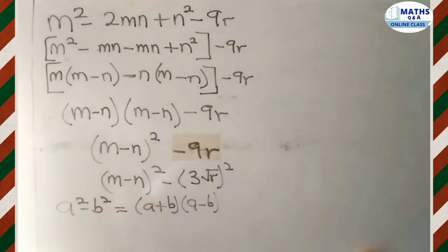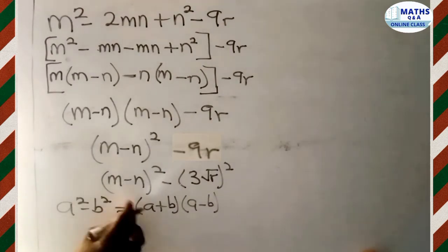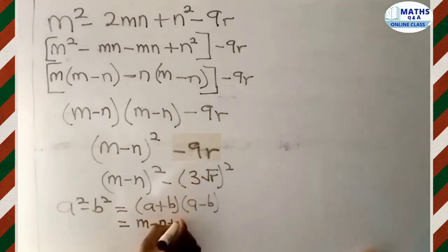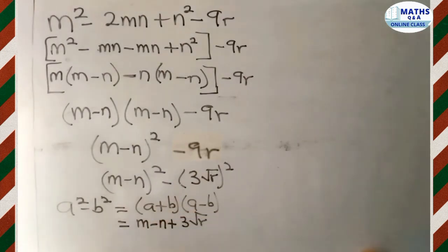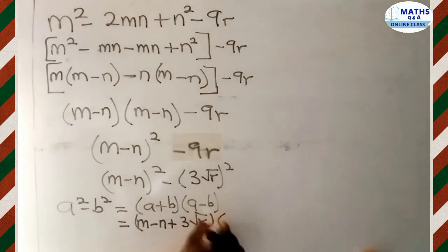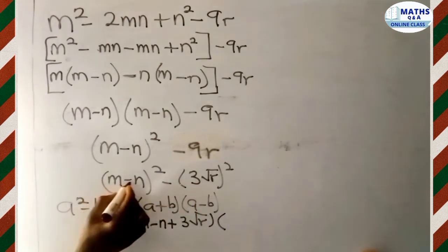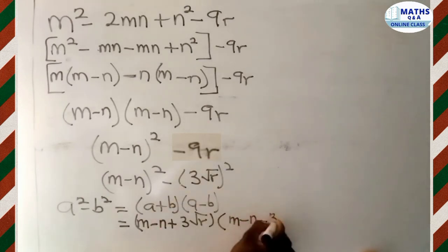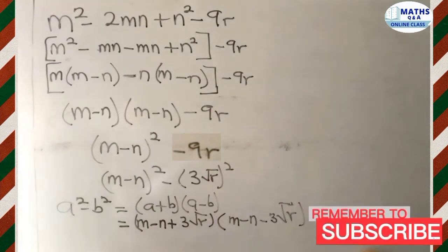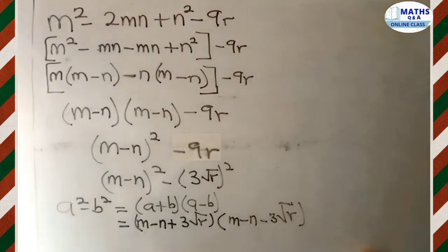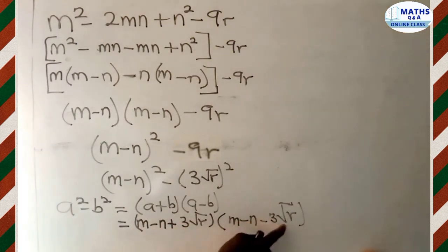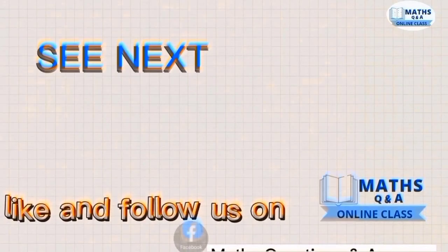In place of A we write (M minus N), and in place of B we write 3 root R. So the first bracket is (M minus N plus 3 root R), and the second bracket is (M minus N minus 3 root R). Finally, the factorized form of M squared minus 2MN plus N squared minus 9R is (M minus N plus 3 root R)(M minus N minus 3 root R).